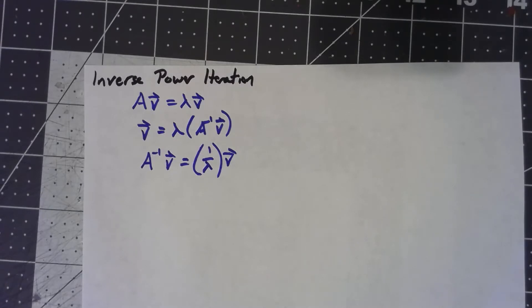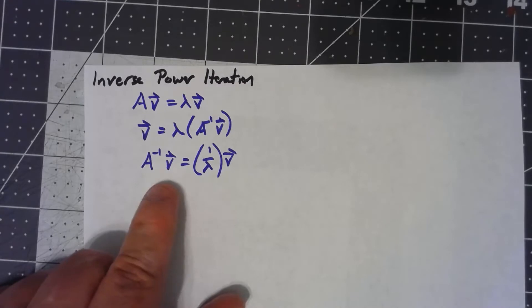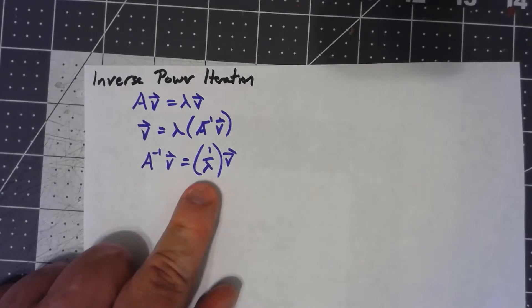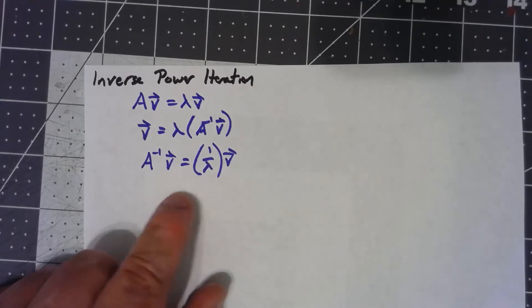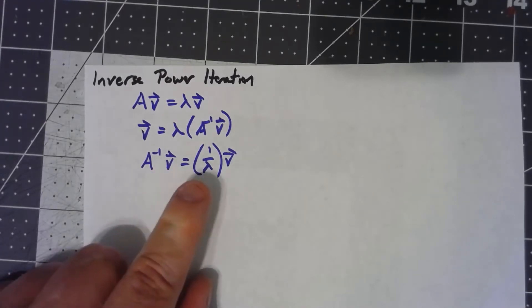So what this says is that the eigenvalues for A inverse are exactly the reciprocals of the eigenvalues for A. So that means that if I use power iteration on A inverse, then I find the largest eigenvalue for A inverse, but that's the reciprocal of the smallest eigenvalue for A.